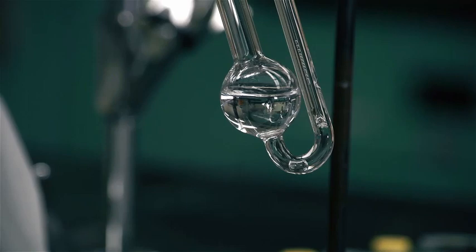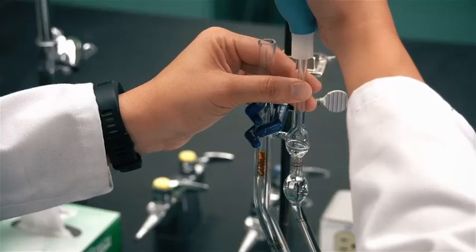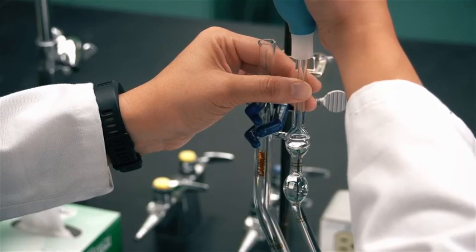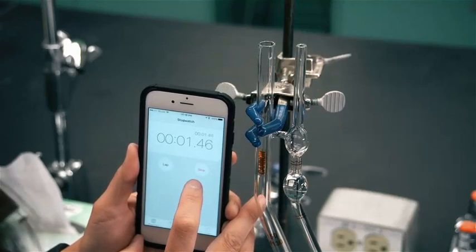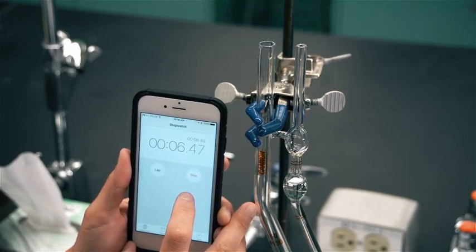Allow about 3 minutes for the viscometer and sample to reach thermal equilibrium. Use a suction bulb to draw the liquid into the upper bulb of the viscometer. Use a stopwatch to measure the time for the meniscus to drop from the upper line on the viscometer to the lower line.